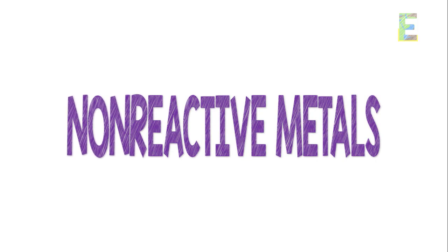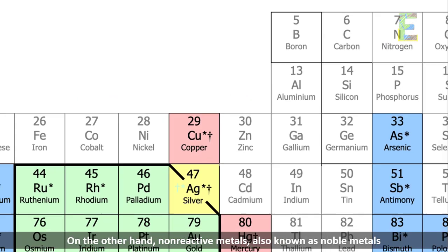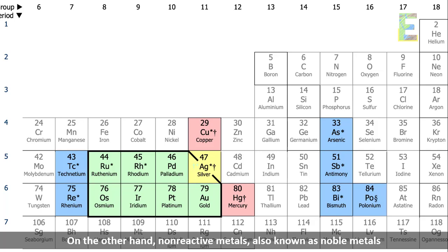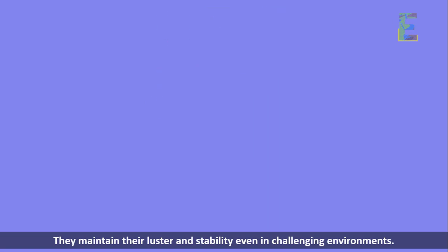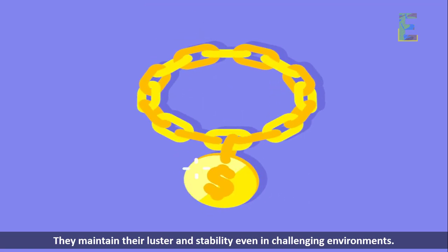Non-reactive metals. On the other hand, non-reactive metals, also known as noble metals, are much less prone to chemical reactions. They maintain their luster and stability even in challenging environments.